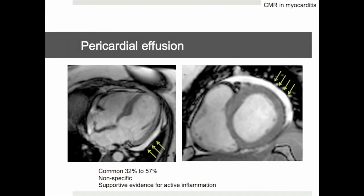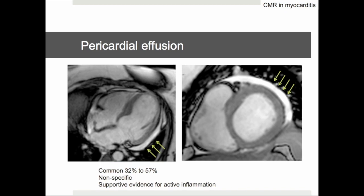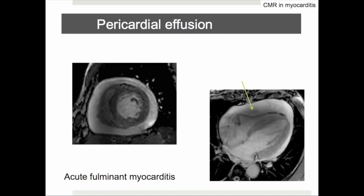Pericardial effusion is a common yet non-specific finding which provides some supportive evidence for the presence of active inflammation. Pericardial effusion can be mild and localized or severe and globally enveloping the heart, with signs of hemodynamic compromise such as diastolic collapse of the right ventricular free wall.